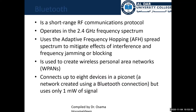Bluetooth is a short-range radio frequency communication protocol using the 2.4 GHz frequency spectrum — the same spectrum used by Wi-Fi. Bluetooth uses adaptive frequency hopping, a spread spectrum technique to mitigate the effects of interference and frequency jamming, allowing Bluetooth to avoid interference with other signals.